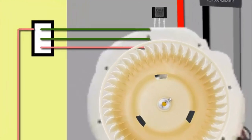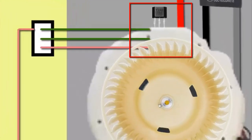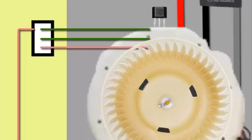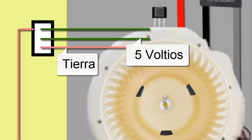This fan has a sensor known as the Hall Effect Sensor, which measures the motor's revolutions. In this case, the Hall Effect Sensor is powered by 5 volts from the electronic board.